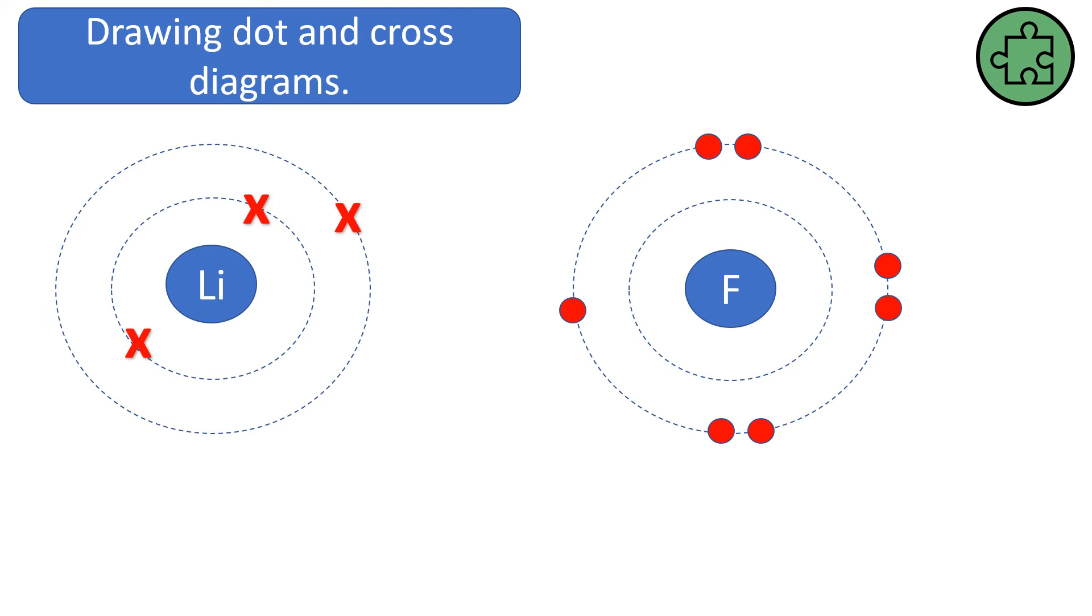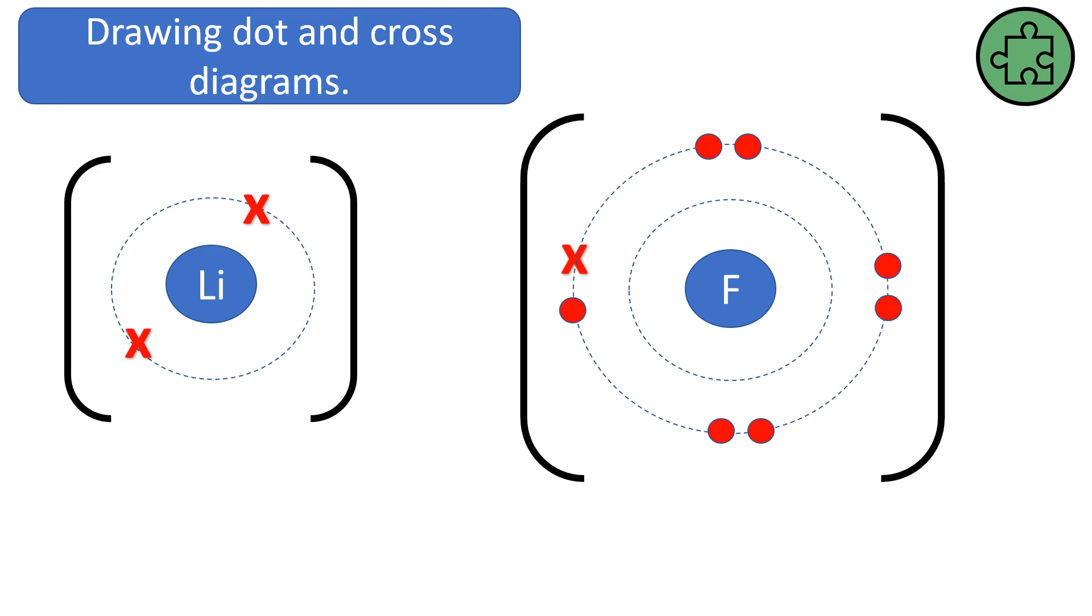This lithium is going to transfer its electron across to fluorine. So let me just get rid of the outer energy level. So what would you actually draw for an ionic dot and cross diagram? Well, this is the after, isn't it? So lithium has got this full outer energy level because it's the only one left. And I'm going to put a bracket around it. And I'm going to put a bracket around this one here with the actual electron. And most importantly, I'm going to put my charge. This is plus one because it's lost one electron. And this is minus one because it's gained an electron. And you can see now why it's called a dot and cross diagram, because it's really obvious that that cross has come from the lithium, because the crosses are the lithium and the dots are the fluorine.